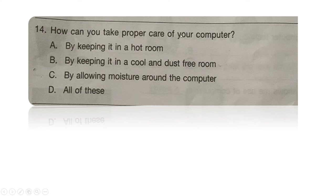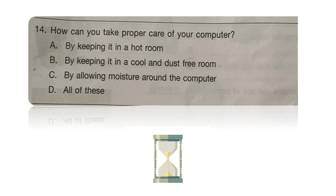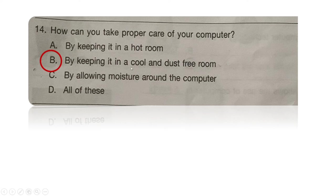Next question: how can you take proper care of your computer? Option A: by keeping it in a hot room. Option B: by keeping it in a cool and dust-free room. Option C: by allowing moisture around the computer. Option D: all of these. The right answer is option B — keeping it in a cool and dust-free room — because a computer is a machine that becomes warm during usage, so a cool environment is needed.